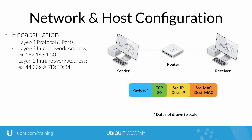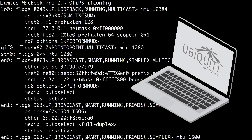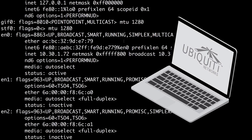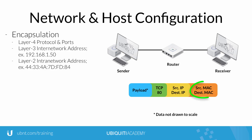At Layer 2, MAC addresses define a network device's address for link-local communication. The MAC is a unique 48-bit hexadecimal-based hardware address. Inside the Layer 2 frame, a source and destination MAC address exists to help move traffic across the local network.